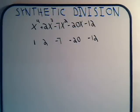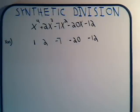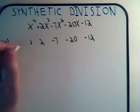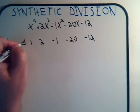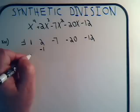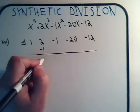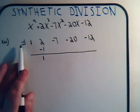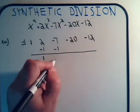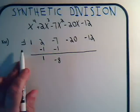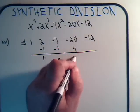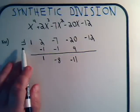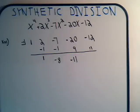How about x plus 1? We write down the negative of this number, minus 1. Add and multiply: this is plus 1. 1 times minus 1 is minus 1. This would be minus 8 times minus 1 is plus 9. That would be minus 11 times minus 1 is plus 11. Close, but that's not going to add up to 0. So we can eliminate that.